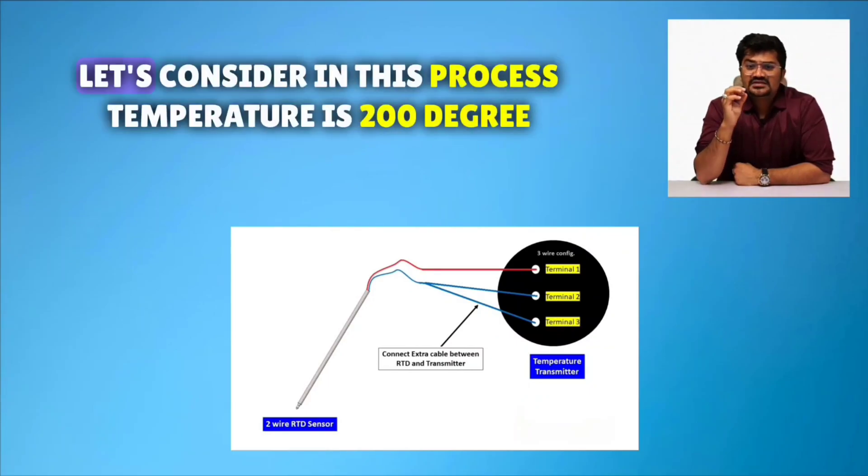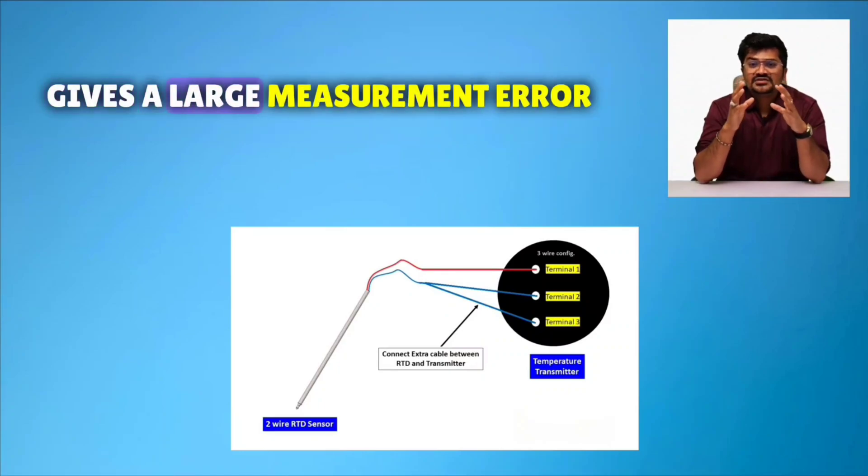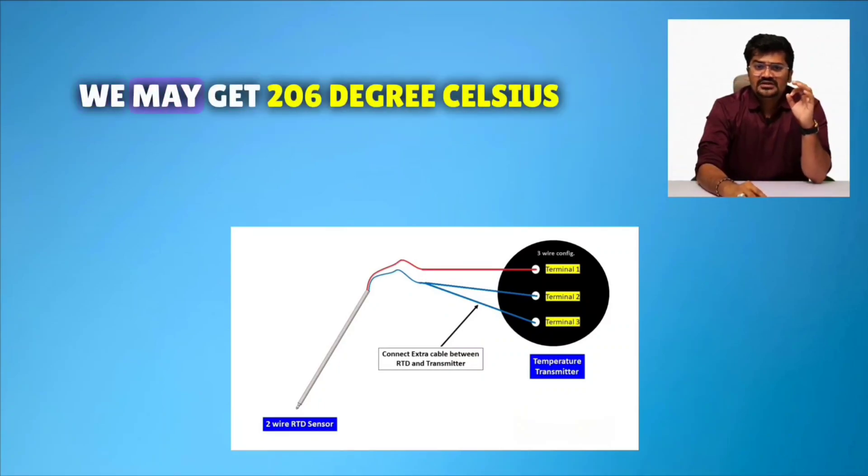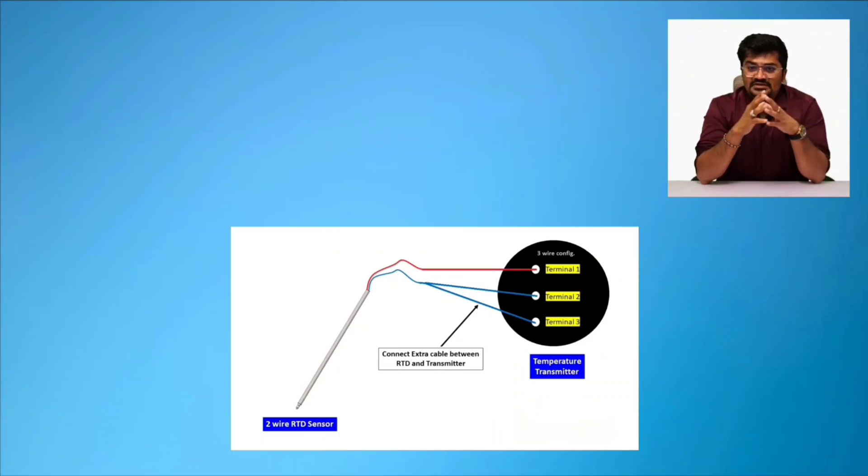Let's consider in this process temperature is 200 degree Celsius and the distance between sensor and transmitter gives a large measurement error. We may get 260 degree Celsius. This type of error is noticeable and it's not acceptable.